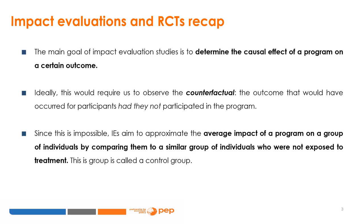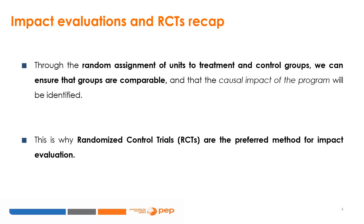This group is called a control group. Through the random assignment of units to treatment and control groups, we can ensure that groups are comparable and that the causal impact of the programme will be identified. This is why randomised control trials, RCTs, are the preferred method for impact evaluation, as we have seen in the previous session.